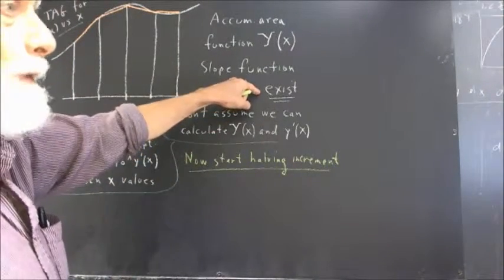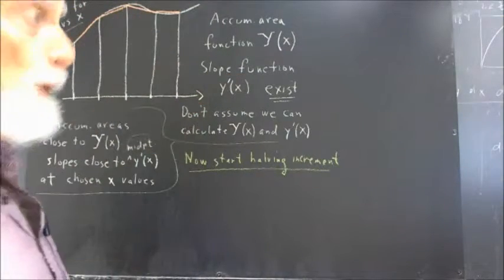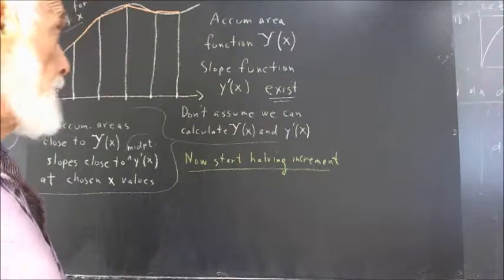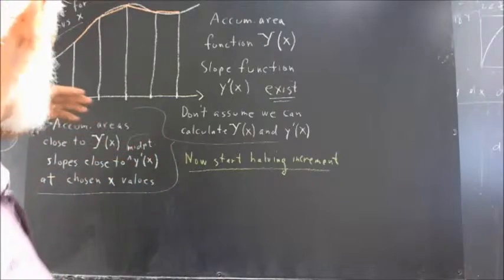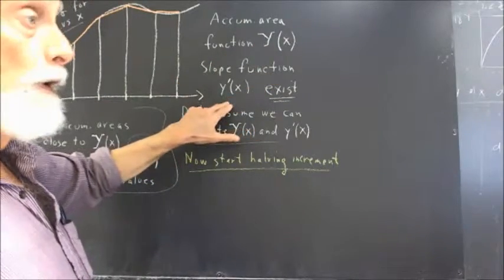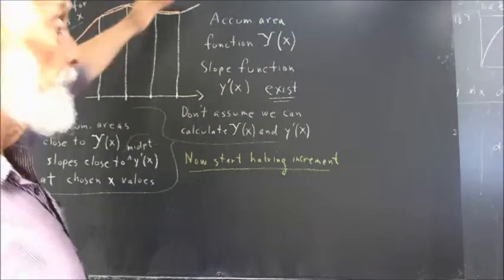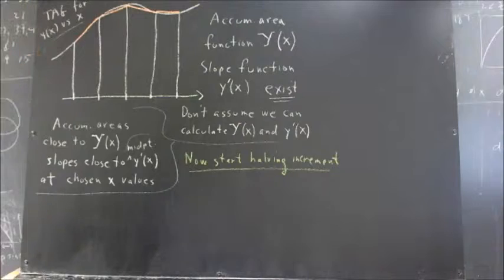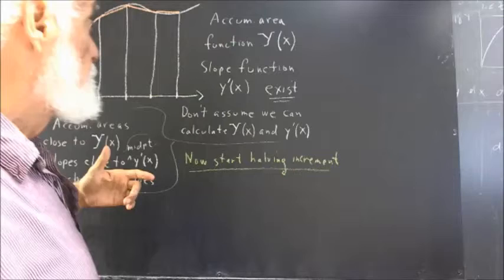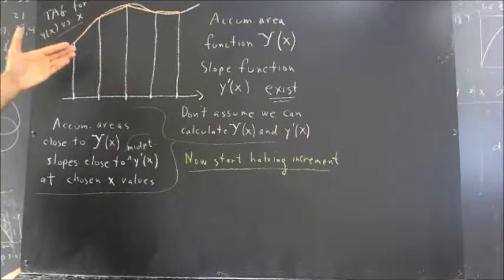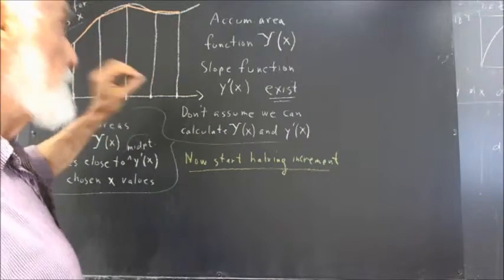Just because they exist doesn't mean we can write down a formula for them. Just because this function is smooth doesn't mean we can write down a formula for it. So we might or might not have rules from calculus that allow us to calculate this function. Whether they can be calculated or not, if this function is well enough behaved — and it's a fairly broad category — just because you can't write down a formula for it doesn't mean it isn't there.